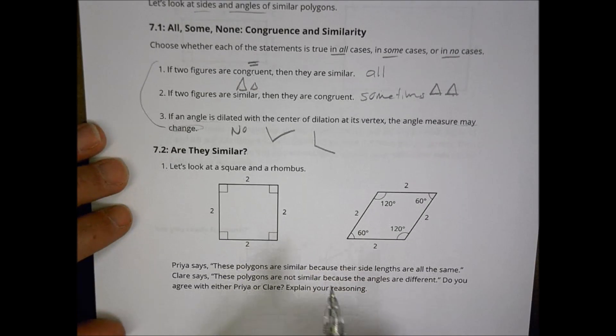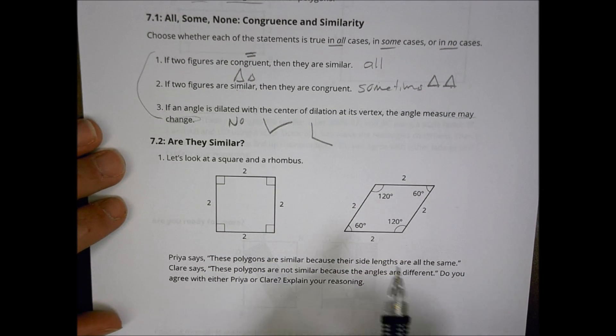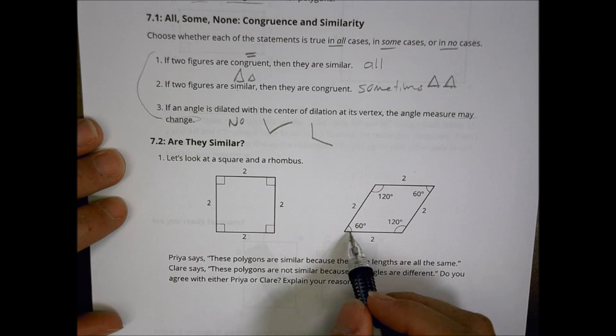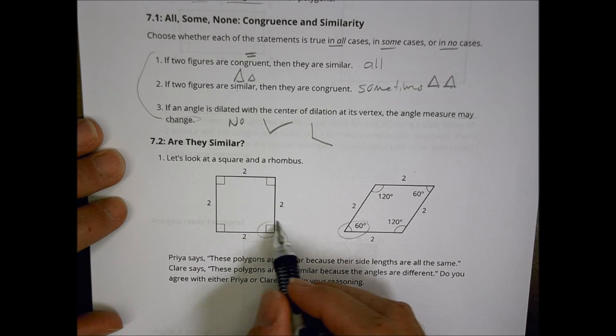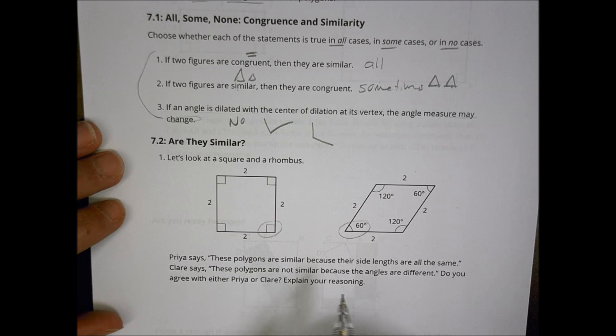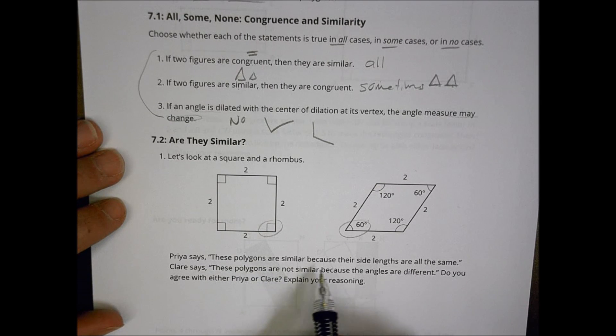So here we go. Are they similar? Let's look at a square and a rhombus. We have side lengths that are the same, but we notice that our angle measurements are all different right there. Prior says these polygons are similar because their side lengths are all the same. Claire says they're not similar because the angles are different. Who do you agree with there?